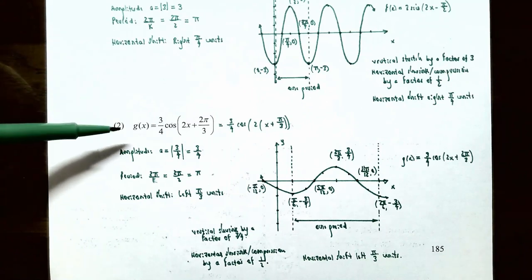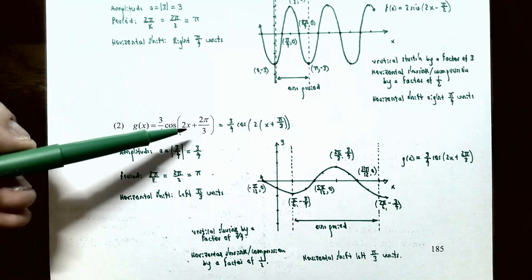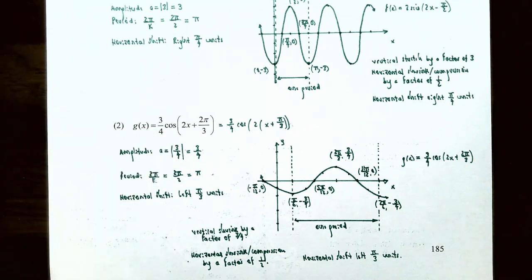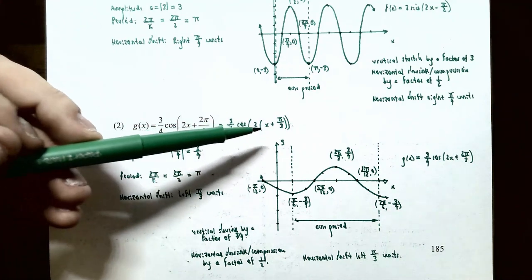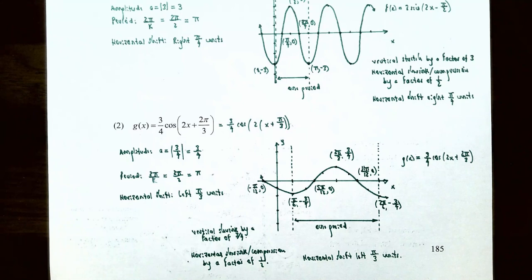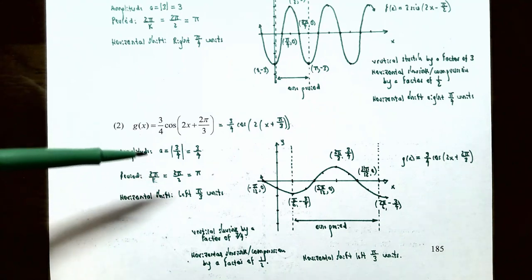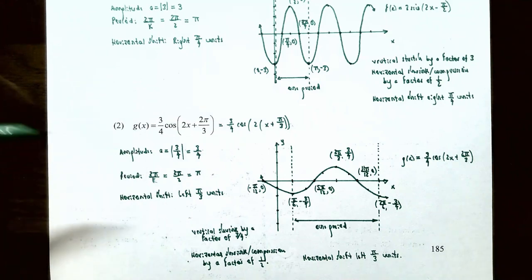For number 2: g(x) = (¾)·cos(2x + 2π/3). Factor out 2 from the argument: 2x + 2π/3 = 2(x + π/3). So k = 2 and b = -π/3. The amplitude is |¾| = ¾, and the graph ranges between y = -¾ and y = ¾. The period is 2π/2 = π. Since b = -π/3, there is a horizontal shift left π/3 units.